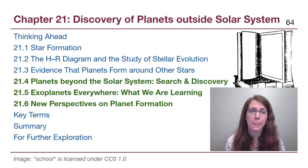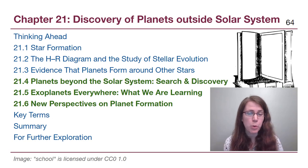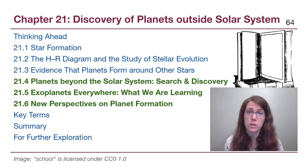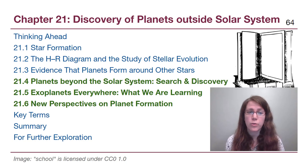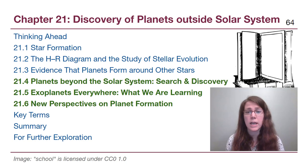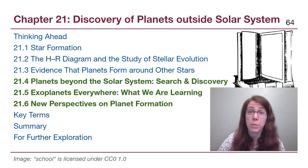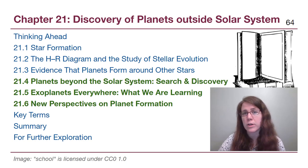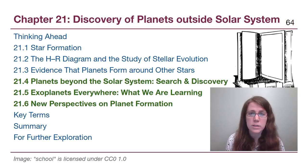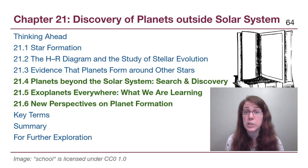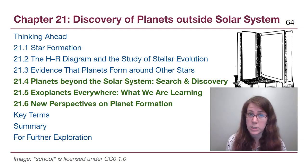Welcome back to Module 7. In this video we are going to return to a portion of Chapter 21 that we had skipped over when it showed up in Module 5. We're going to be talking about how we look for other planets in other systems — exoplanets — and compare to the information we had already gained about binary star systems. We'll then get a better understanding of the current statistics and missions working on this particular problem.